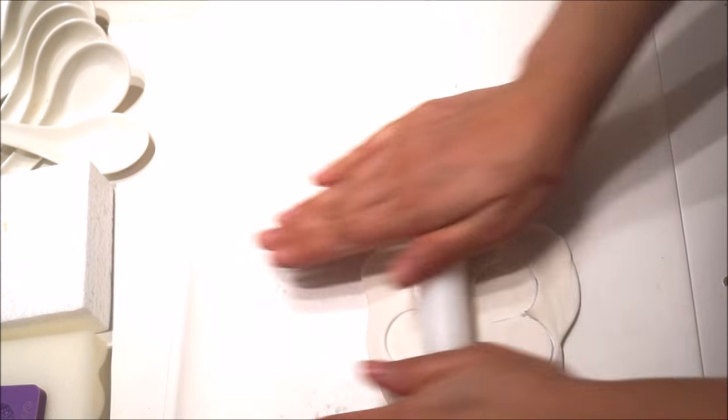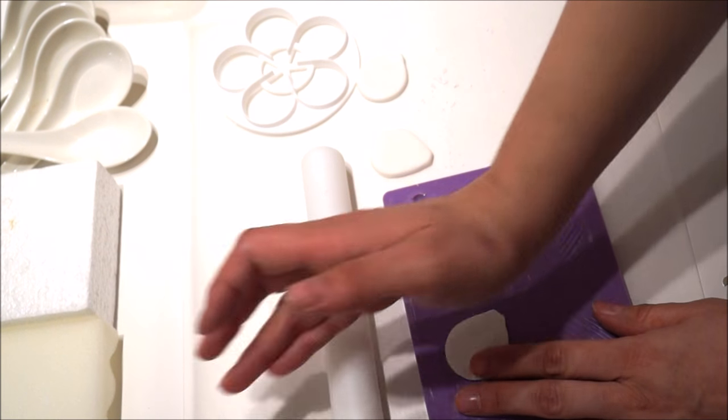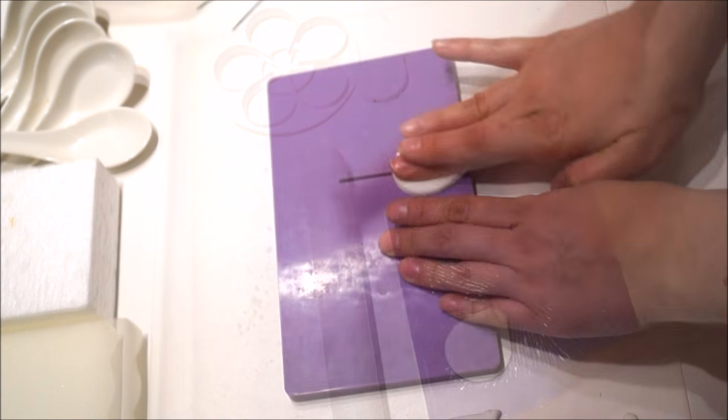Roll out white fondant not too thin and cut out three pieces using the rose cutter. Transfer your petals one by one onto your vein mold and press it down to create a realistic effect.